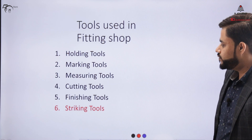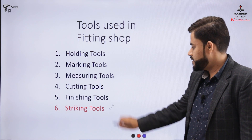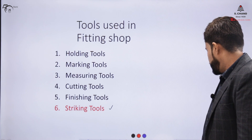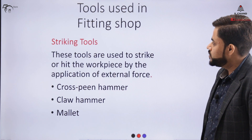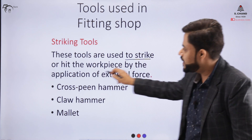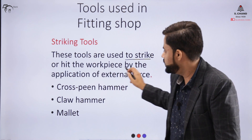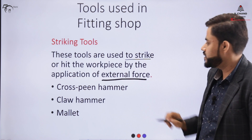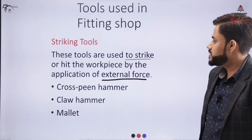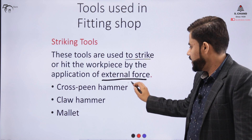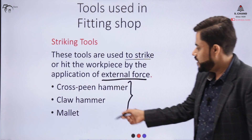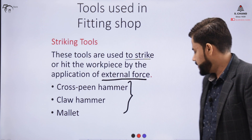The last category is the striking tool. As the name suggests, this is the tool used to strike or hit the workpiece by the application of an external force. The striking tools are categorized as: cross-peen hammers, claw hammers, and the mallet.